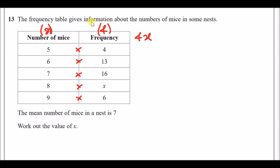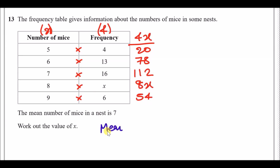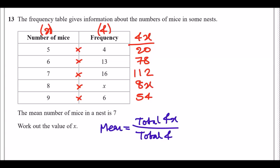Let's multiply all the values: five times four is twenty, six times thirteen is seventy-eight, the next one is 112, eight times x gives 8x, nine times six is fifty-four. The mean equals the total fx divided by the total frequency, so we add up all those values and the whole frequency column.